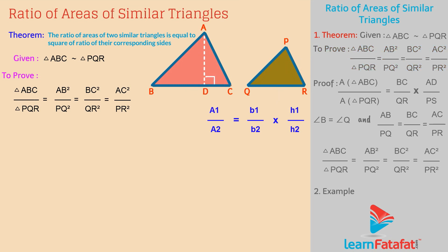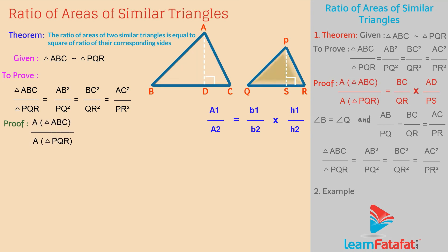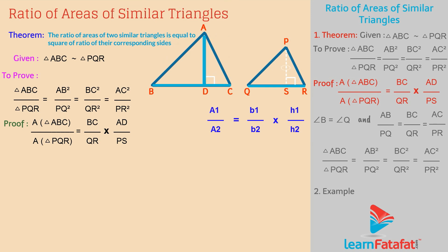Construction: Draw AD perpendicular to BC and PS perpendicular to QR. Proof: The ratio of areas of two triangles can be given as area of triangle ABC divided by area of triangle PQR is equal to BC divided by QR into AD divided by PS. This is relation 1.